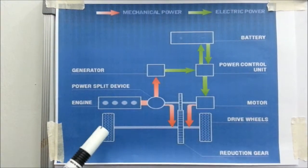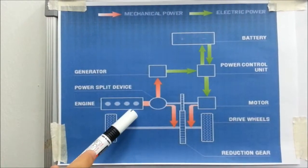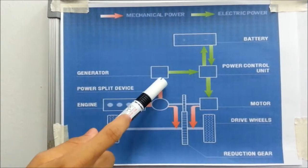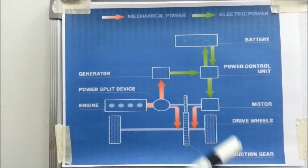The basic components of the system are the electric motor, the gas petrol engine, the generator, the power split device, and power control unit.